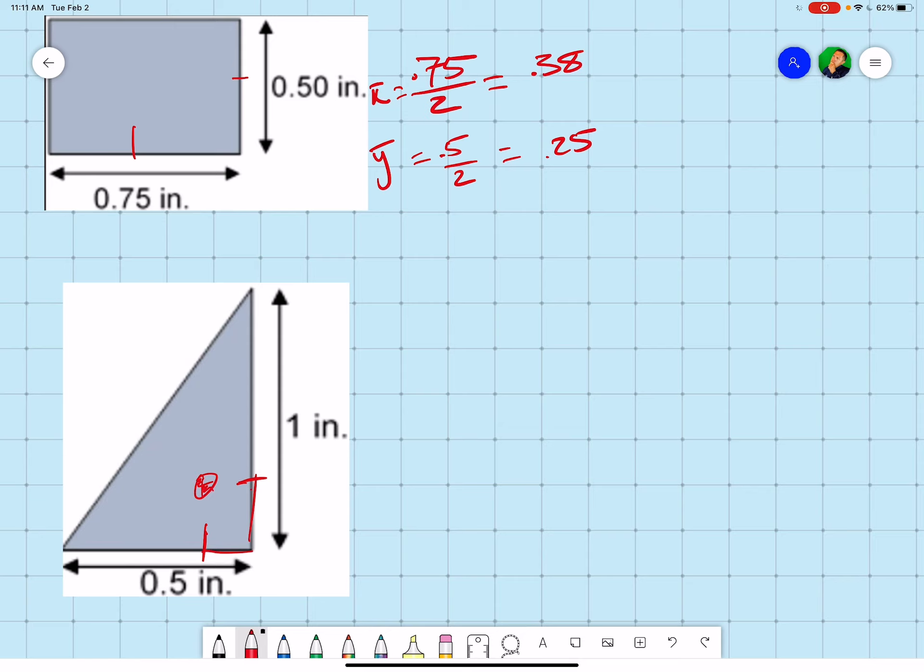We're going to do our 0.5 divided by 3 for our x, and we are going to do our 1 divided by 3 for our y.